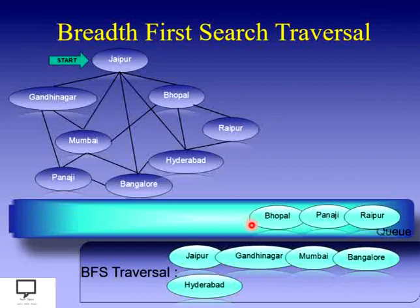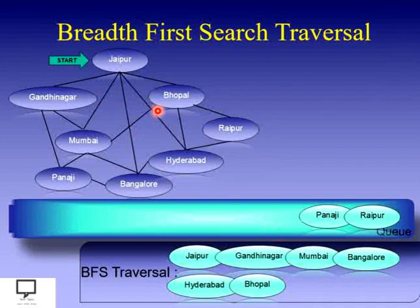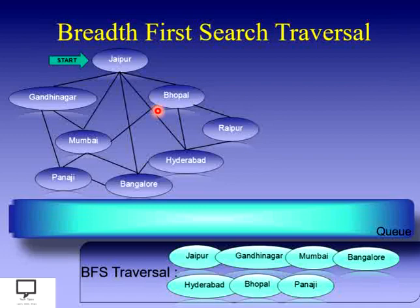Move back to step one to delete the front element — Bhopal — access and display it in the BFS traversal. For Bhopal, all vertices are already visited, so skip step two. Return to step one, delete the front element — Raipur — access and display it. In this way we have the breadth first search traversal for the given graph.